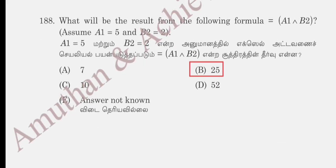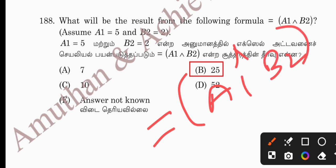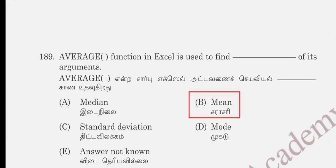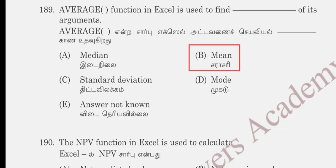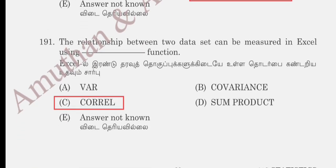Question 188: in Excel, the formula = A1^B2 gives A1 raised to the power of B2. If A1 = 5 and B2 = 2, the answer is 25. Question 189: the AVERAGE function in Excel is used to calculate the mean. Question 190: the NPV function in Excel is used to calculate the net present value. Net present value is correct. Question 191: the relationship between two data sets can be measured in Excel using the CORREL function — options include variance, covariance, or CORREL. CORREL is correct.